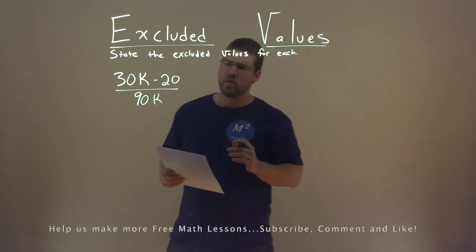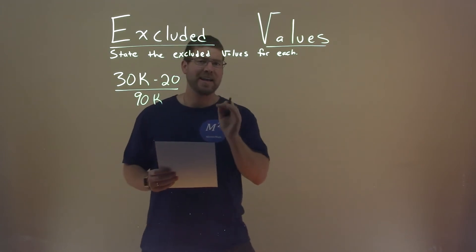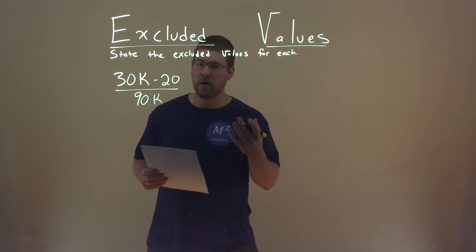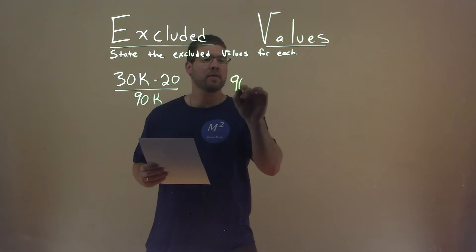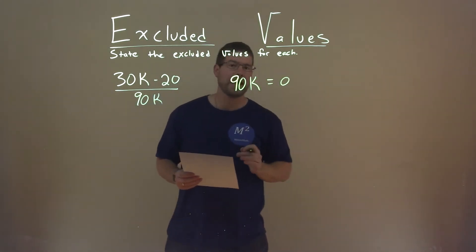Well, the main thing I'm looking at here is this is a rational function, meaning the denominator cannot equal zero. So I'm going to take that denominator, 90k, and I'm going to set it equal to zero and solve for k here.